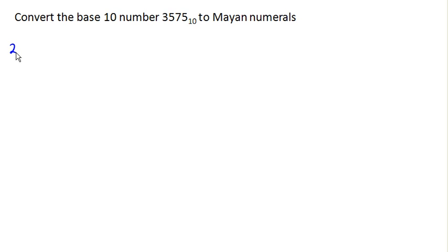So we're going to have our 1s place, our 20s place, our 400s place, and the next place would be the 8,000s place which is bigger than we need here.